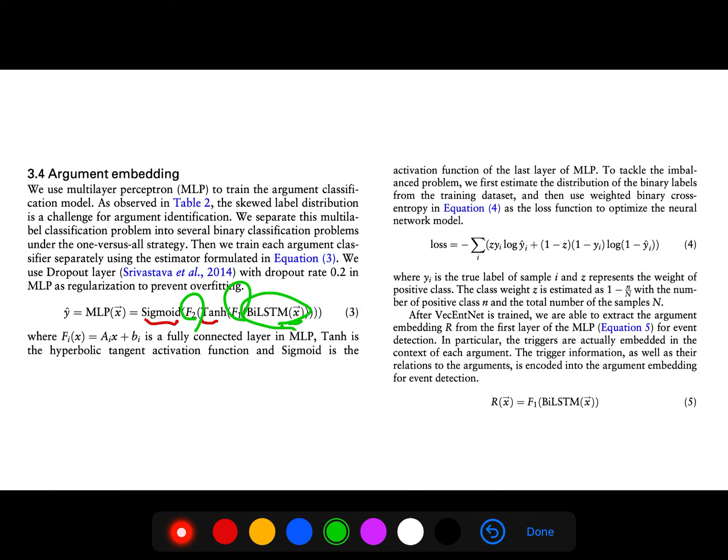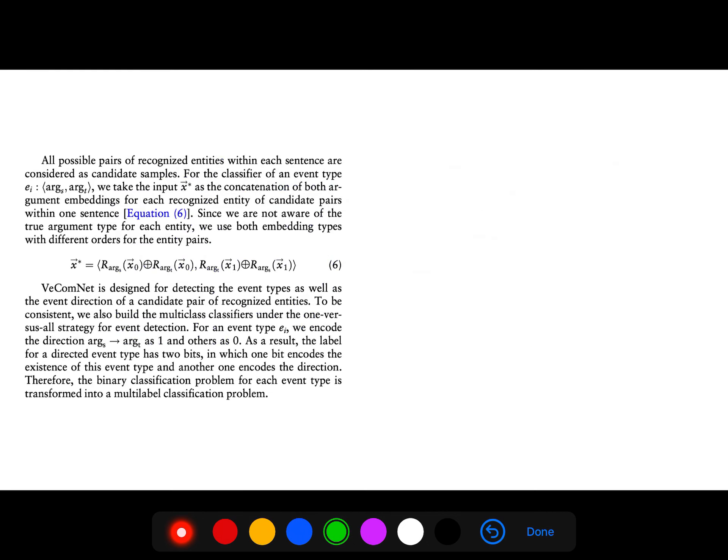The triggering information as well as their relation is encoded into argument embedding for event detection. Since we are not aware of the true argument type for each entity, we use both embedding types with different orders for the entity pairs.